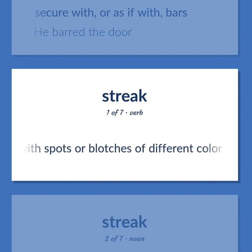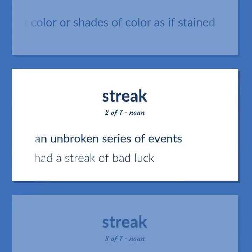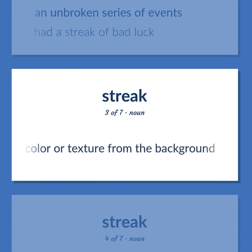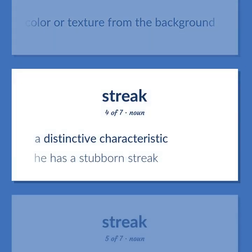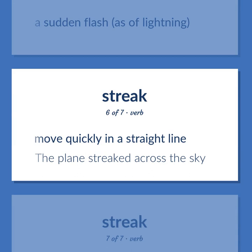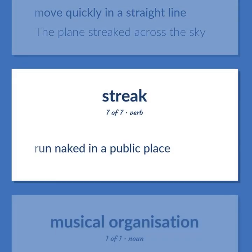Mark with spots or blotches of different color or shades of color as if stained. An unbroken series of events. Had a streak of bad luck. A narrow marking of a different color or texture from the background. A distinctive characteristic. He has a stubborn streak. A sudden flash, as of lightning. Move quickly in a straight line. The plane streaked across the sky. Run naked in a public place.